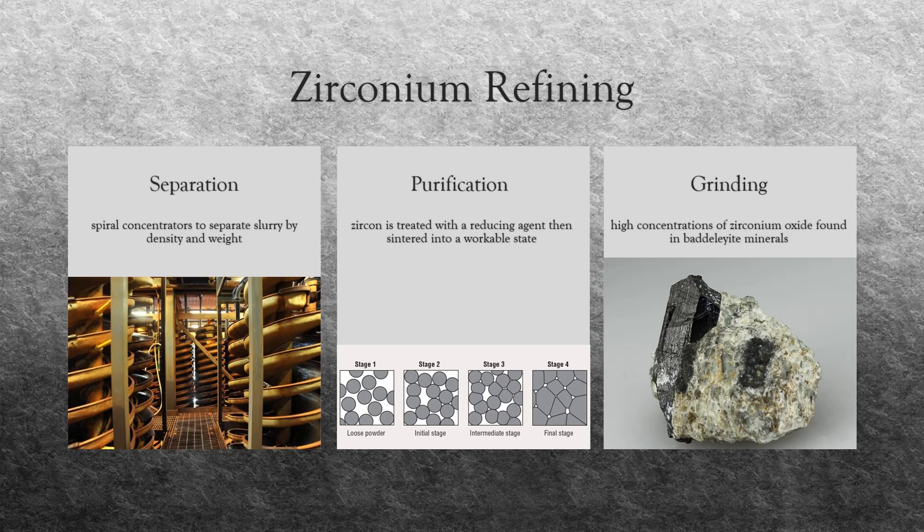In the separation process, spiral concentrators are used to separate the slurry of materials by their density and weight. The zirconium sand is placed into feed distributors, which evenly distribute the materials to flow down several stories of tall spiral columns. As the materials fall, gravity and centrifugal forces separate the mixture, as heavier and denser particles gravitate to the inside of the spiral column, while lighter particles separate to the outside edge. The waste is then separated through magnetic and electrostatic separators. Because zircon possesses very low magnetic and electrically conductive properties compared to the surrounding rock, several passes through these separators remove the waste and leave only the zircon concentrate.